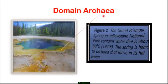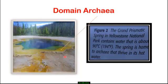This is the domain Archaea. This place in America — the Grand Prismatic Spring in Yellowstone National Park — contains water that is about 90 degrees, a very hot extreme environment. This spring is home to Archaea. Archaea can live in extreme environments, and these Archaea thrive in its hot water.